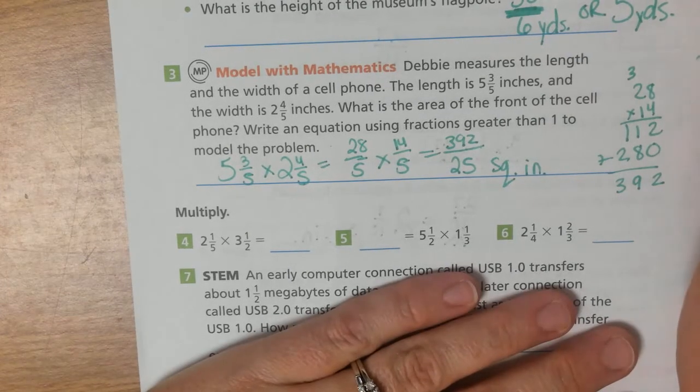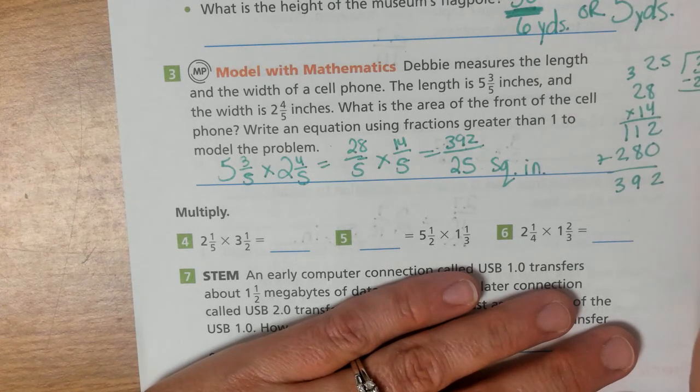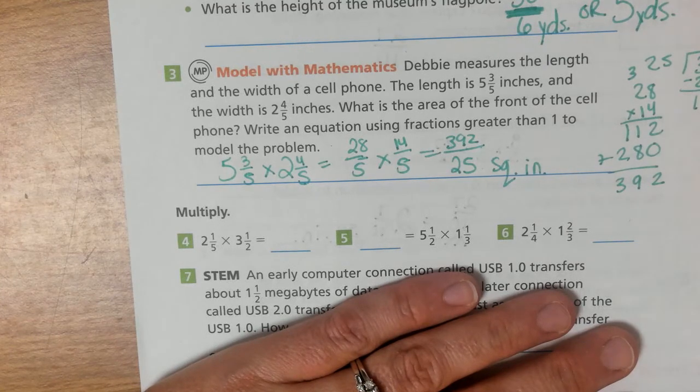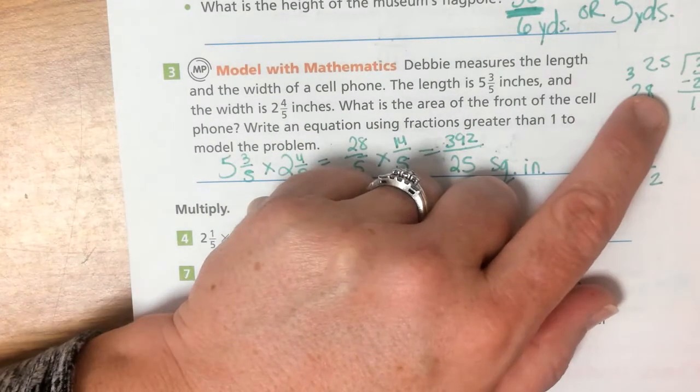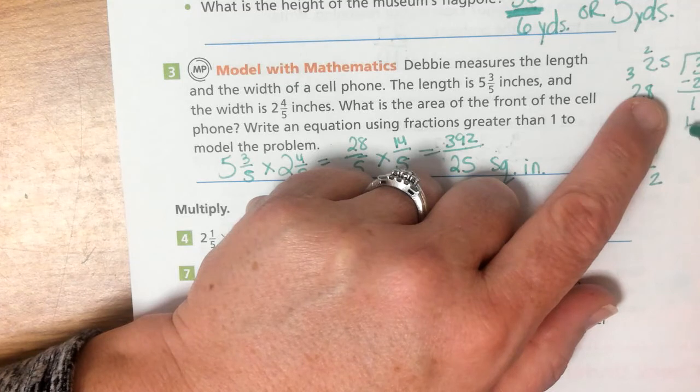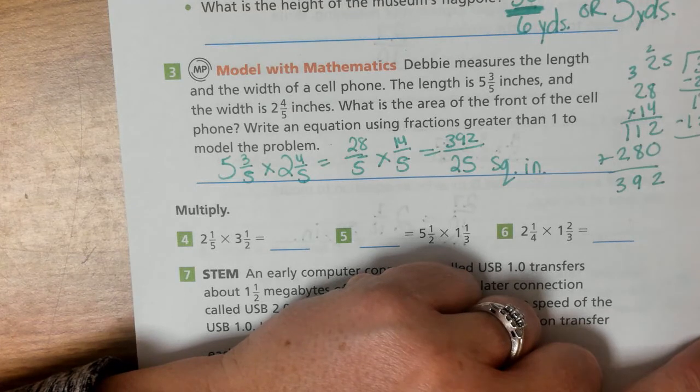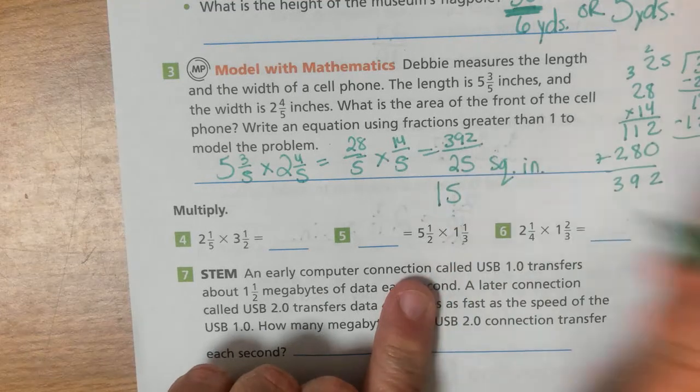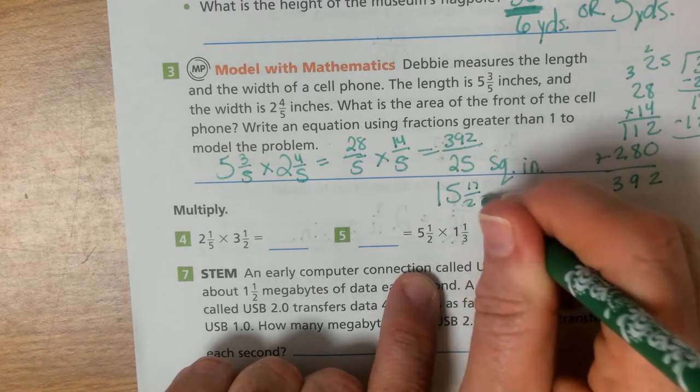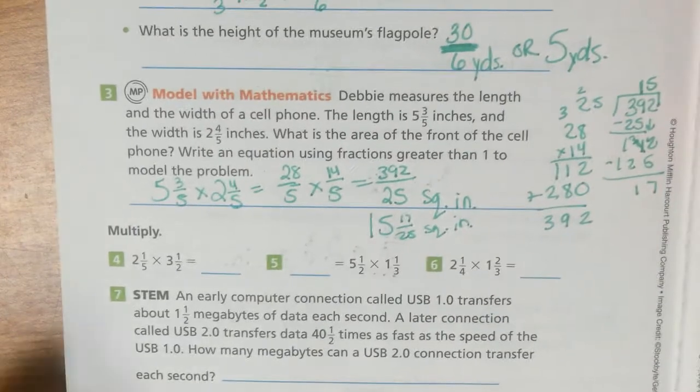8 times 4 is 32. 2 times 4 is 8 plus 3 is 11. 8 times 1 is 8. 2 times 1 is 2. Add those together. 392 over 5 times 5 is 25 square inches. And, if you wanted to divide them, you could find your mixed number. So, what you would do is 392 divided by 25. So, there's 125 and 39. Bring down your 2. It would be 5 25s. 5 times 5 is 25. 10, 125, subtract 3, 12, 7, 17. So, you would have 15, 17, 25 square inches. If you did the division that went along with it.